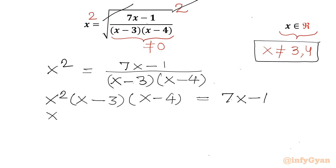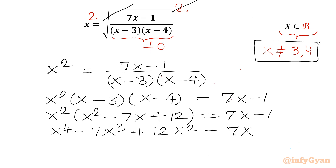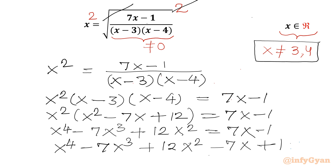Let's multiply out x squared times the two brackets. Expanding (x minus 3)(x minus 4) gives x squared minus 7x plus 12, so we get x to the power 4 minus 7x cubed plus 12x squared equals 7x minus 1. Rearranging: x to the power 4 minus 7x cubed plus 12x squared minus 7x plus 1 equals 0.